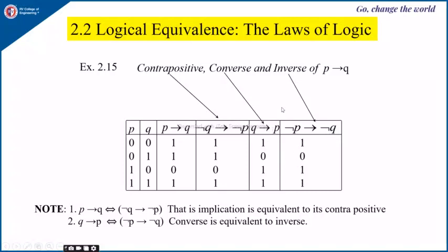From the truth table we can observe that P implies Q is equivalent to its contrapositive, negation of Q implies negation of P. Also, Q implies P is equivalent to its contrapositive, negation of P implies negation of Q. Note 1: P implies Q is equivalent to negation of Q implies negation of P — an implication is equivalent to its contrapositive. Note 2: The converse and inverse of P implies Q are equivalent.